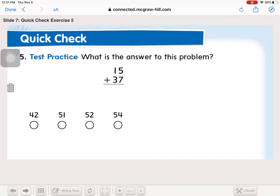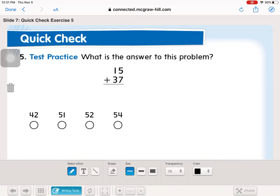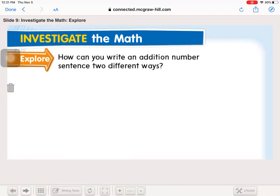What is the answer to this problem? 5 plus 7 is 12. 1 plus 1 plus 3 is 5. Find 52 down here and color it in.